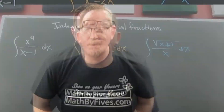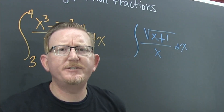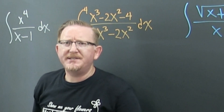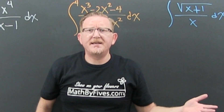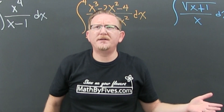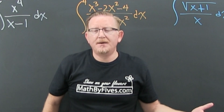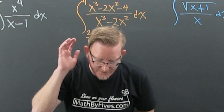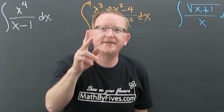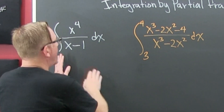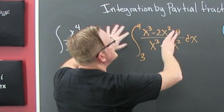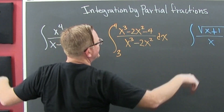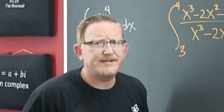When do we want to integrate by partial fractions? When we have no other way to do it. First, you always try U-substitution — that's cheap and easy. Then you try everything else, but sometimes you still can't. And when you can't, look at those denominators. If the denominator has factors, you can split those.